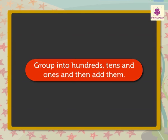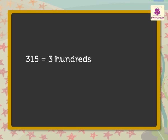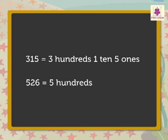Let us group them into hundreds, tens, and ones and then add them. So, there are 3 hundreds, 1 ten, and 5 ones orange starfish, and 5 hundreds, 2 tens, and 6 ones red starfish.